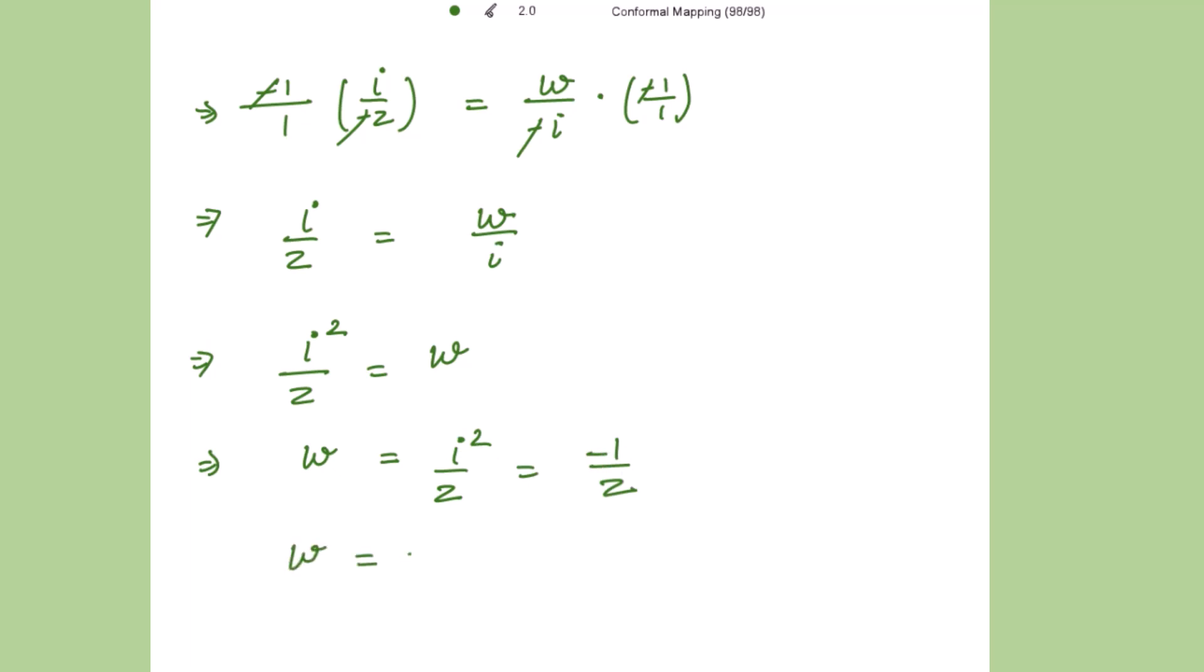So w equal to negative 1 over z is the required bilinear transformation. All right. Thank you. Have a nice day.